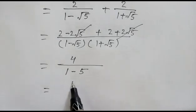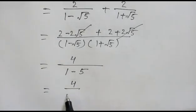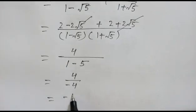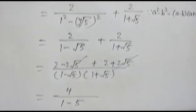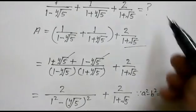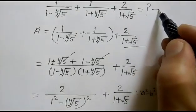So we have 4 over 1 minus 5, which is 4 over minus 4. This equals minus 1. So our answer is minus 1.